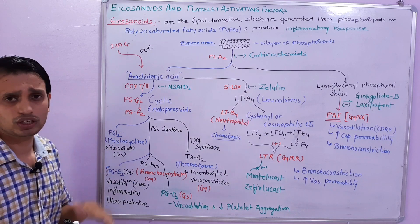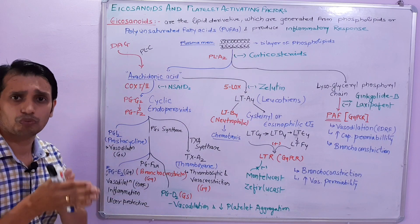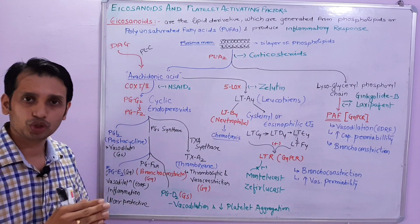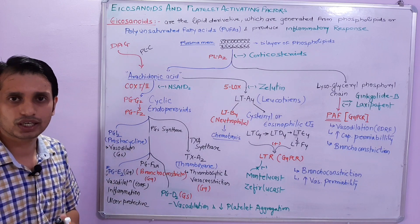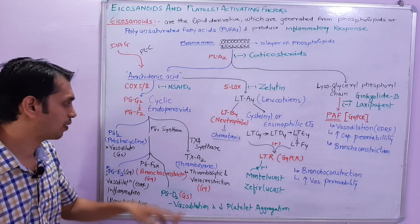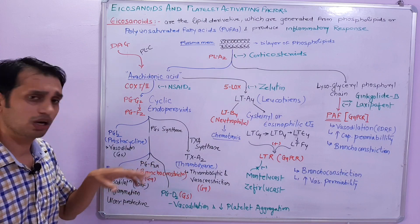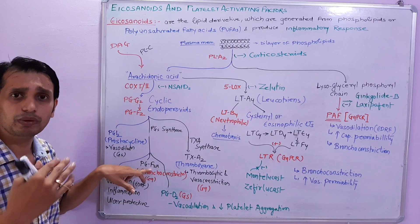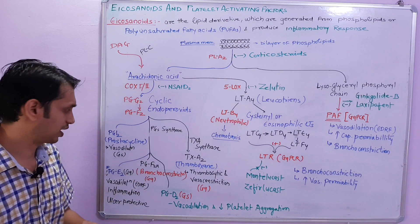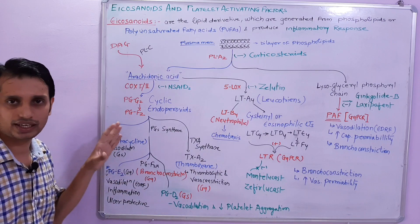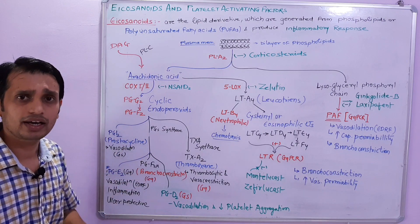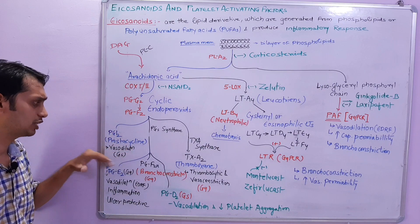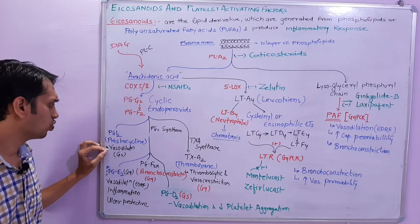About PGI2: prostacyclins are good for the heart — they work against thromboxane. The effect is vasodilation. Prostacyclin mainly acts by GS-PCR and may cause the vasodilation effect via EDRF, meaning endothelial derived relaxing factor, through which blood vessels will relax.